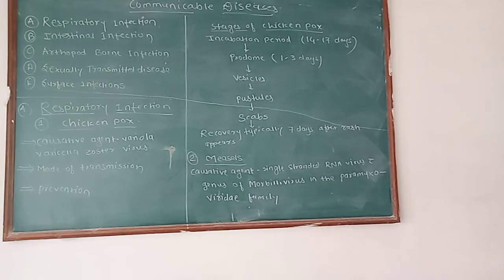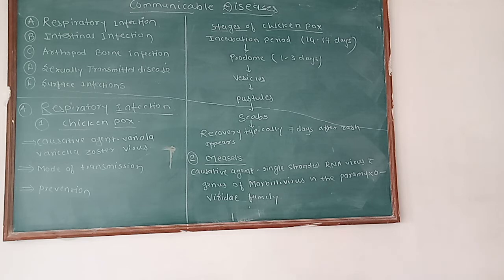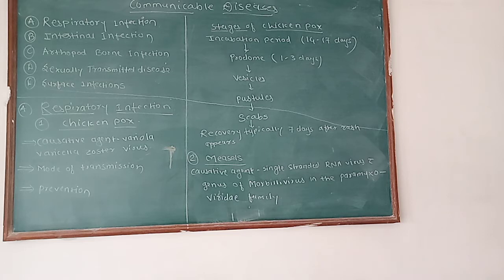Now we will discuss the stages of chicken pox. The first stage is the incubation period — if the virus enters a person's body, the incubation period is 14 to 17 days. After 14 to 17 days comes the prodrome stage, which means the early signs and symptoms lasting 1 to 3 days. Then come vesicles — small blisters full of clear fluid.